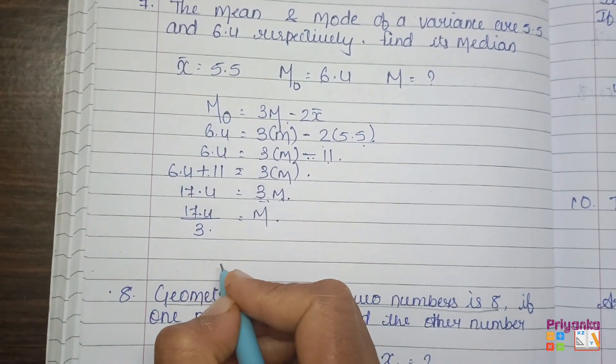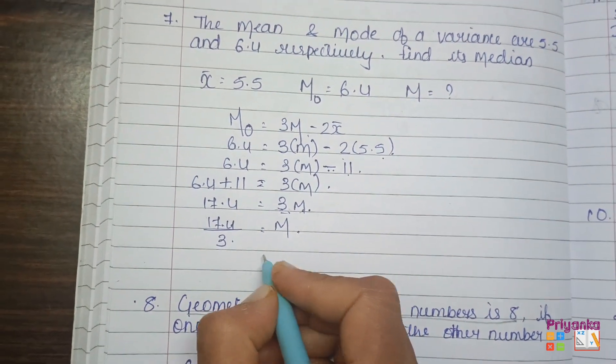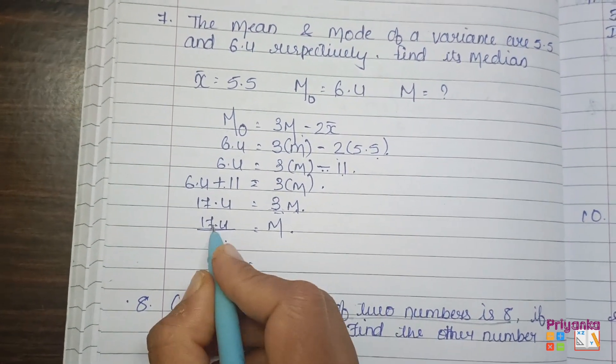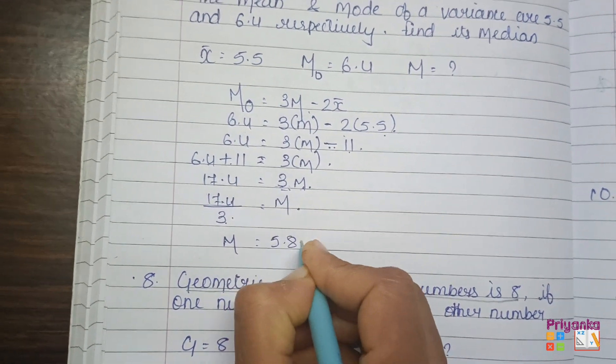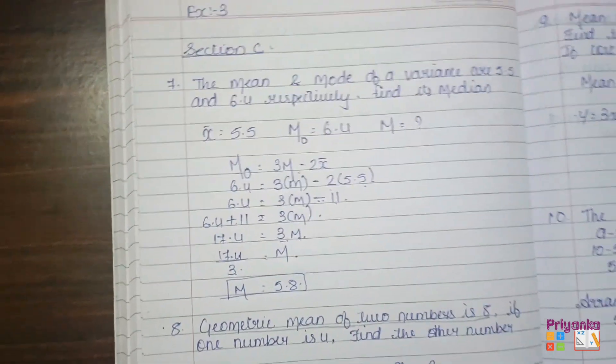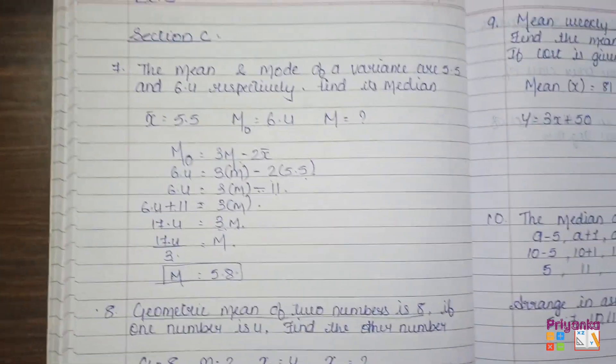So here we got 17.4 divided by 3. Here we got the median, 5.8, which has been asked in the question. Next.